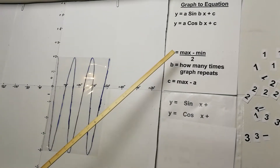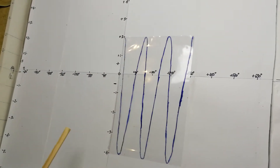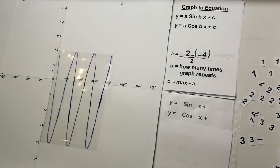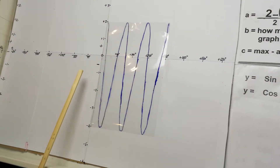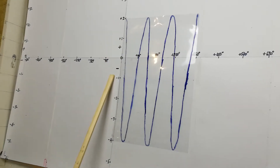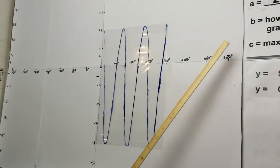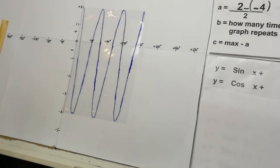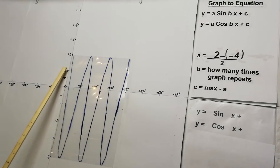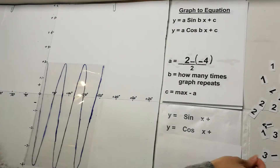To get the a value we do the maximum minus the minimum divided by 2. The maximum is 2 and the minimum is negative 4, so 2 minus negative 4 = 6, divided by 2 = 3. You can also think of a as the distance from the center to the top — you can count 1, 2, 3 — so the a value is 3. This is a cosine graph.